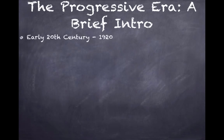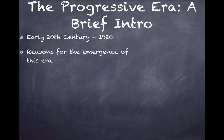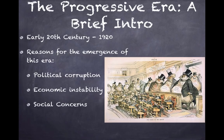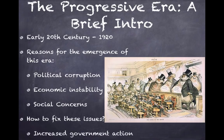We'll start with a brief intro to the Progressive Era. This is the early 20th century until about 1920. The reasons for the emergence of this era, straight from the curriculum, are political corruption — as seen in the famous political cartoon 'The Bosses of the Senate' — economic instability, and social concerns. The Progressives wanted increased government action to fix these three issues.